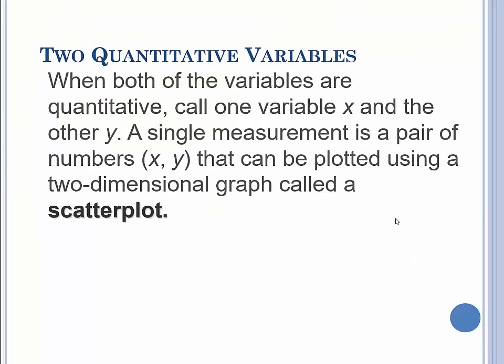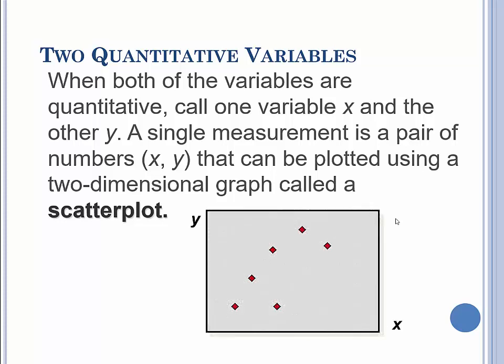When both of the variables are quantitative, i.e. measurable numbers, then you can call one variable x, the other y, and then you get a single measurement on each. Each unit has two measurements and those two things can be paired together as an x, y. It comes with an ordered pair. And then you can graph those on the Cartesian plane and you get a scatter plot. And then you can start looking for patterns: linear or quadratic or curve or whatever, but you can look for a relationship between them.